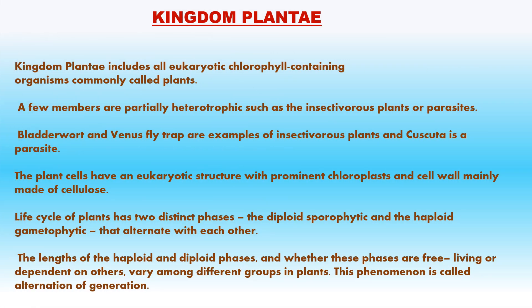Kingdom Plantae includes all eukaryotic, chlorophyll-containing, photosynthetic plants present on land and in water. They have a rigid cellulose cell wall and are immotile — fixed at one place with no locomotory organs. Mostly autotrophic, synthesizing food by photosynthesis; a few are heterotrophic. The life cycle of plants exhibits alternation of generations — a diploid sporophytic phase and a haploid gametophytic phase. They are mainly producers on land and along seashores. Major groups include: algae (red, brown and green), bryophytes (mosses and liverworts), pteridophytes (ferns), and gymnosperms (seed plants without flowers).